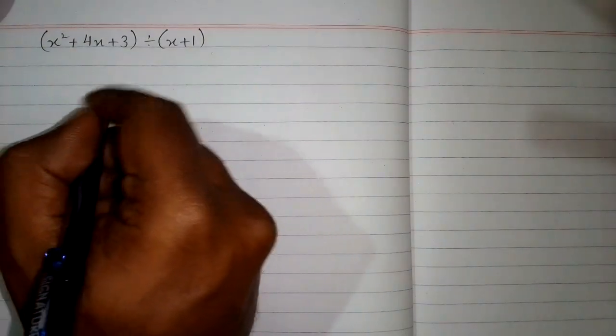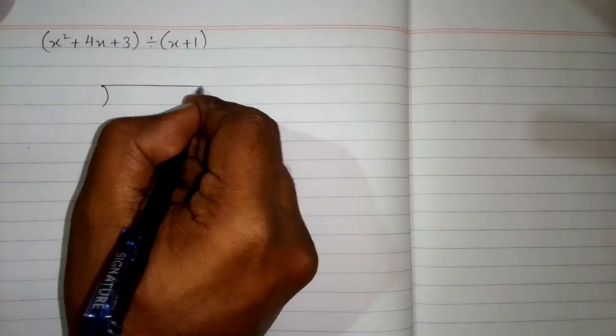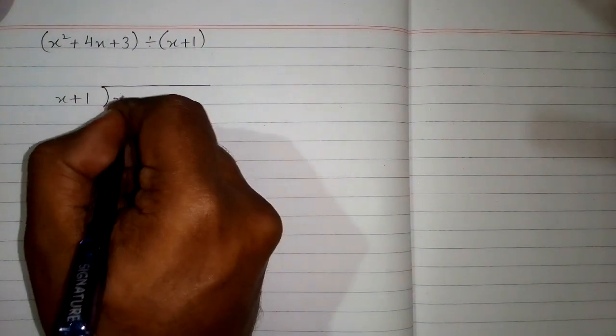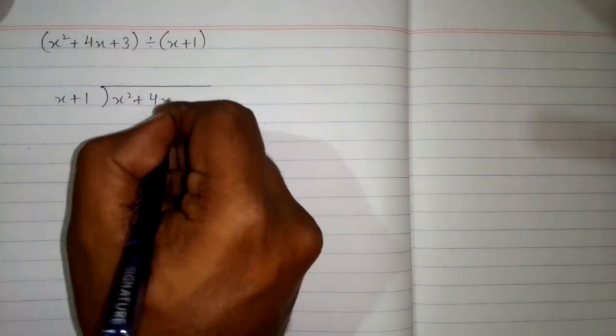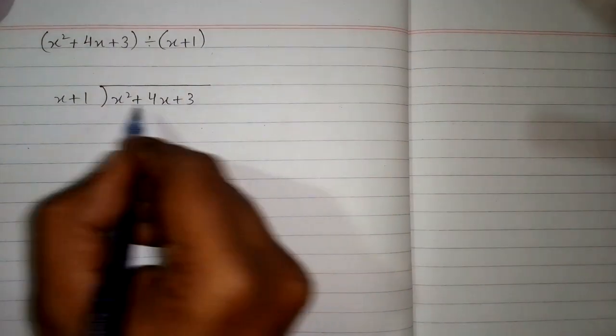In this video we will do division of polynomials. We have a polynomial x squared plus 4x plus 3 and we have to divide this by x plus 1. First we will draw the structure for long division and write x plus 1 outside and x squared plus 4x plus 3 on the inside of the structure.